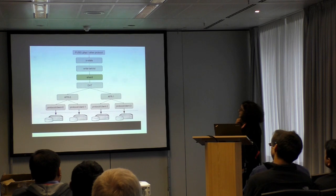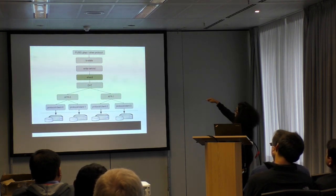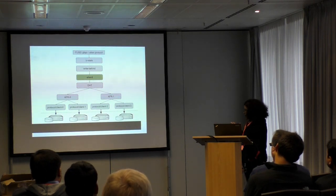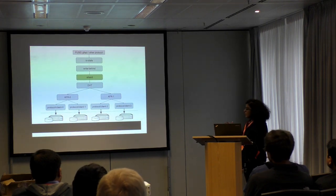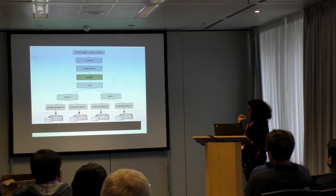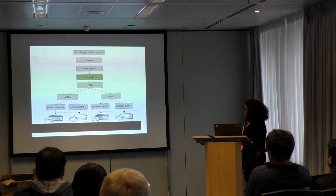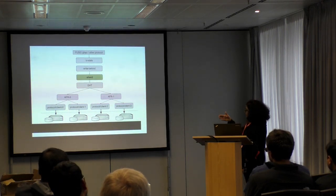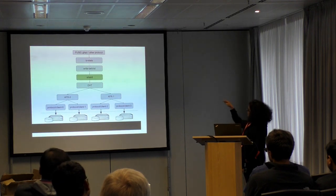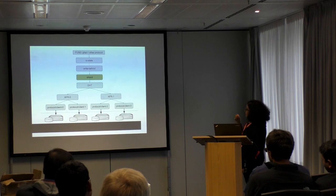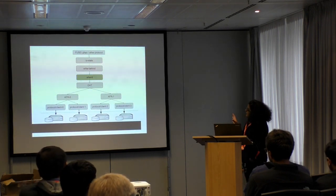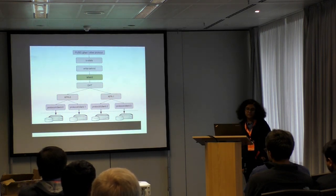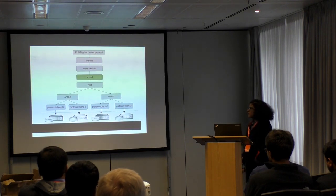Translators above sharding only see the files created by the application, while translators below sharding see all the shards as normal files. In the stack, sharding sits above DHT. When a write comes in with FD offset and size, sharding decides which block to write to and creates that block file if it doesn't already exist. DHT then distributes these files based on its hashing algorithm and parameters like minimum free disk and minimum free inode.